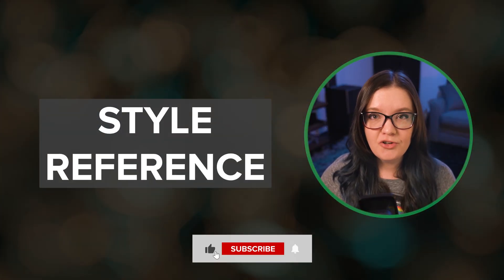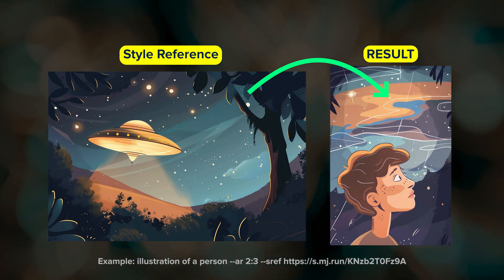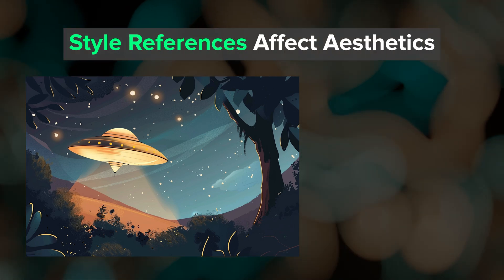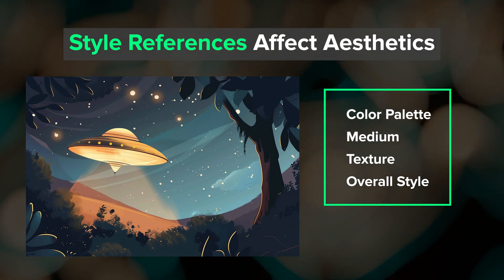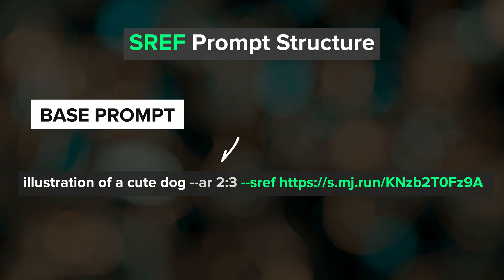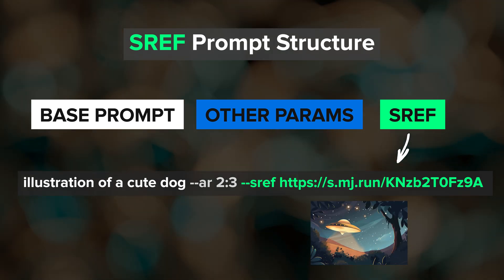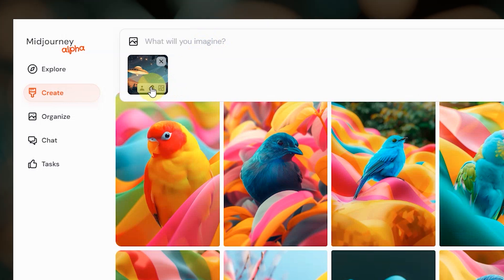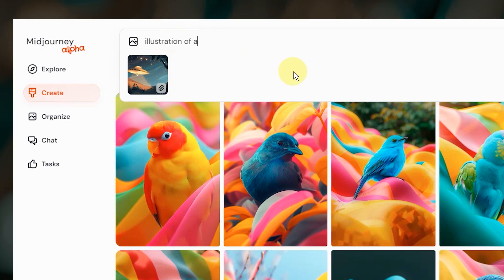The third way to use images in MidJourney is as style references, where MidJourney will try to match the visual aesthetics of your image. This is different from image prompts and blending — style references mainly affect aesthetic elements like color palette, medium, texture, and overall style without necessarily incorporating the subject matter of the reference image. To use it, type your prompt, then add the style reference parameter --sref, a space, and then paste the URL of the image that you want to use. If you're prompting on the web, make sure that your style reference image has the little paper clip icon selected — this tells MidJourney to use it as a style reference.